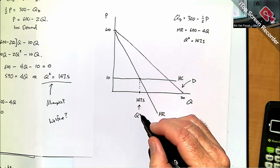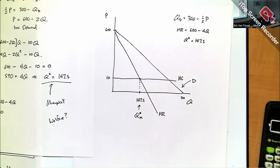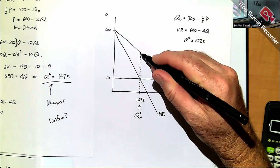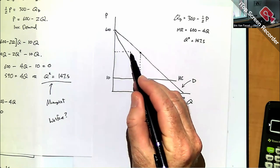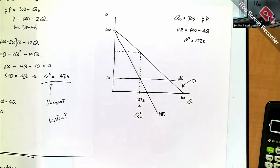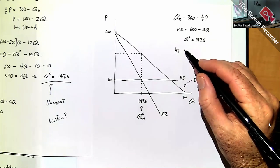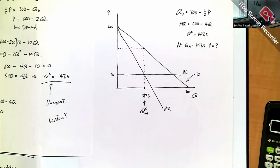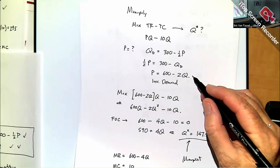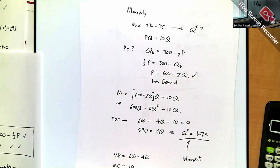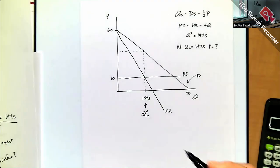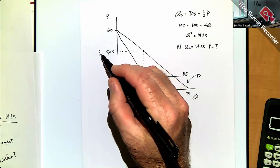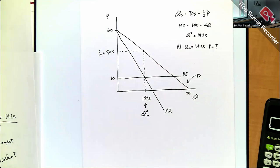The price the monopolist charges is found by going up to the demand curve at Q=147.5 and using the inverse demand: P = 600 − 2(147.5) = 600 − 295 = 305. So the monopolist charges $305 per unit.